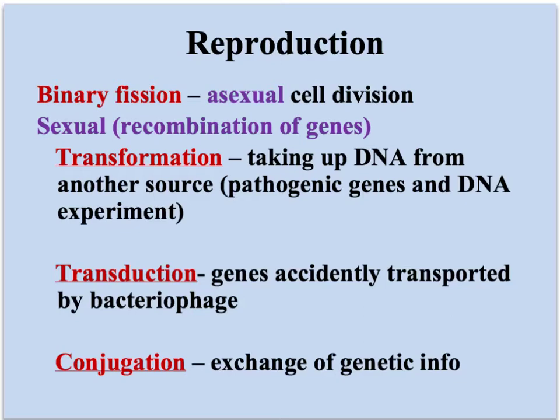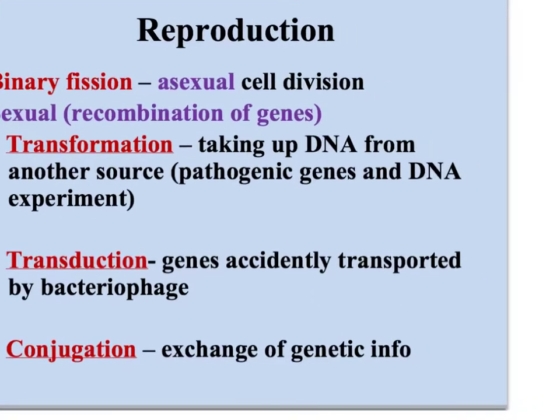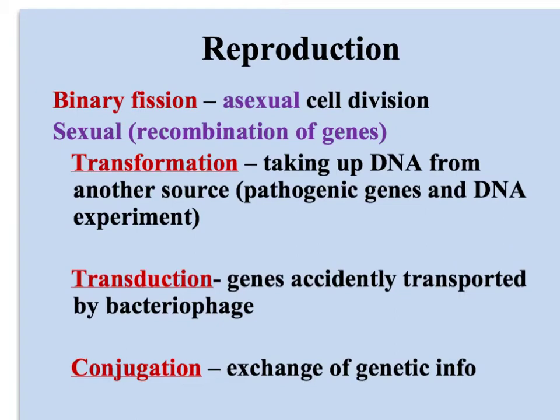So binary fission — this is asexual cell division, so this is cloning. It's going to make itself over and over again. So if it were me, I would clone myself and there would be two of me. And then if I were to do it a bunch of times, it would be a colony. So it's the same bacteria cell over and over and over again — no change in the genetic material.